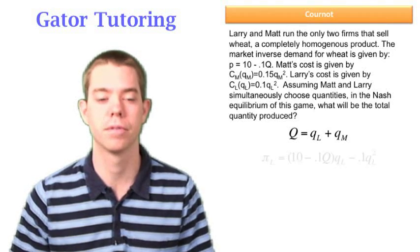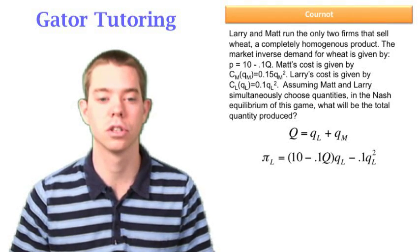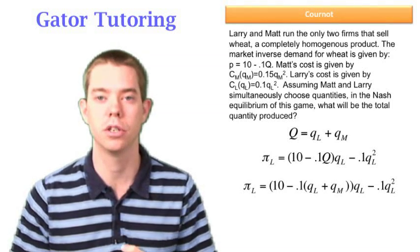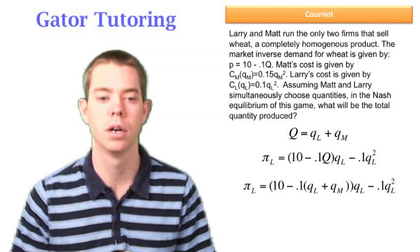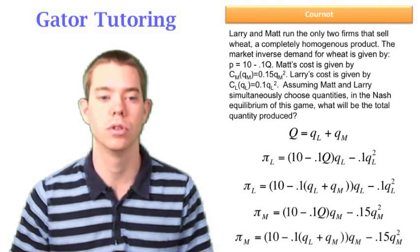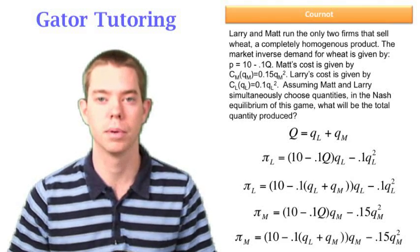Well, first we need to write each person's profit function. Larry's profit function looks like this. We can substitute in for big Q because we know big Q is just equal to QL plus QM. And Matt's profit function is very similar, just a different cost function on the end. And we can substitute in for QL and QM again.